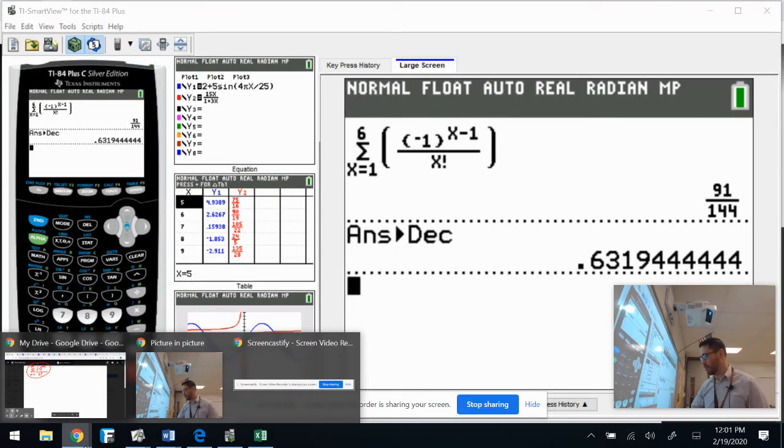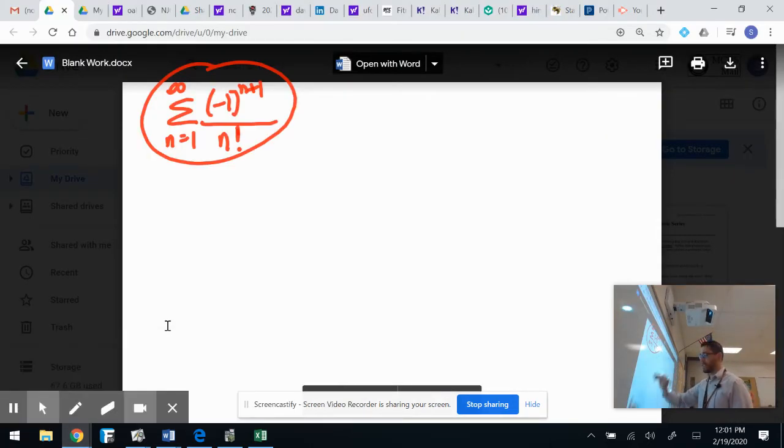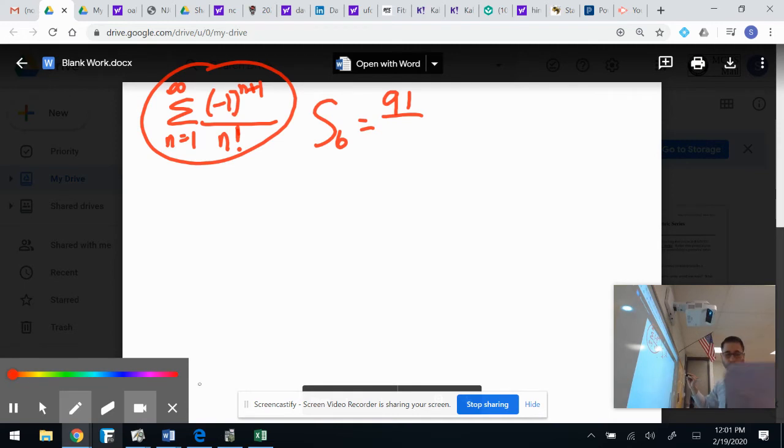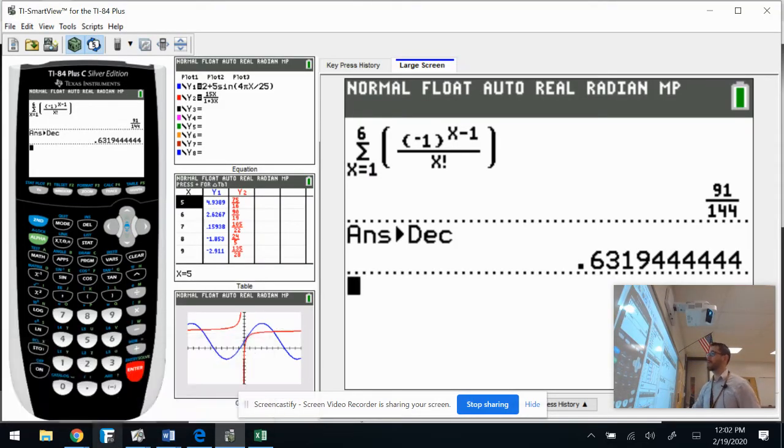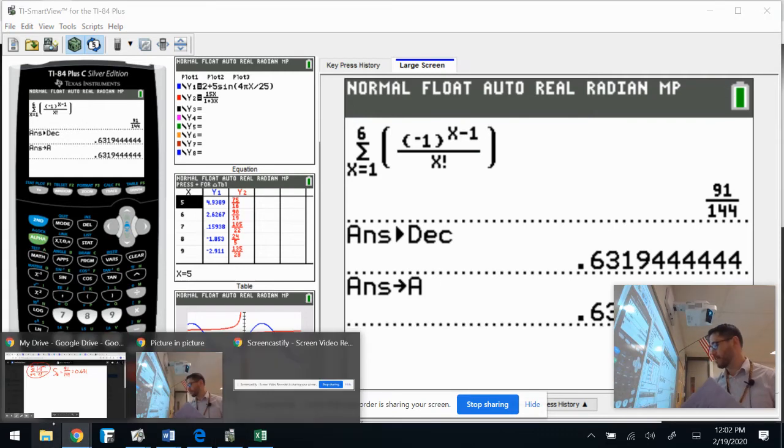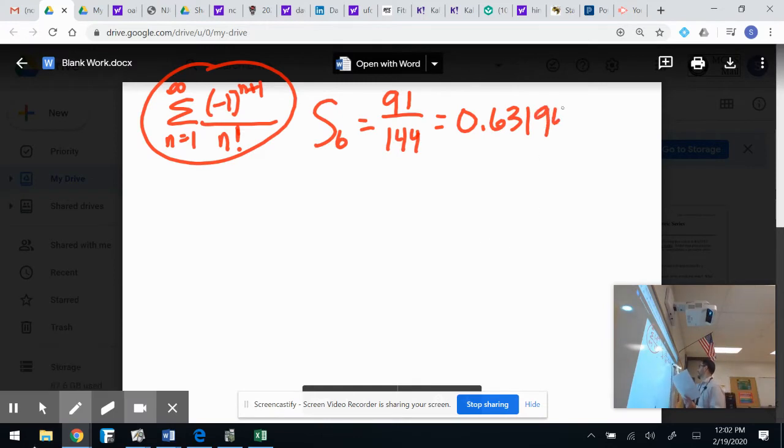Let's go ahead and hit the decimal for that guy. So we can math decimal that bad boy. So I get 0.6319. Now we're going to go back to our other screen here. And it says to sum up, we're going to sum up the first six terms. So that would be S six. And if I sum up the first six terms, I get 91 over 144, which is equal to 0.63194. Let's go ahead and store that bad boy. Let's store it in alpha A. Cause we're going to use that in a little bit.